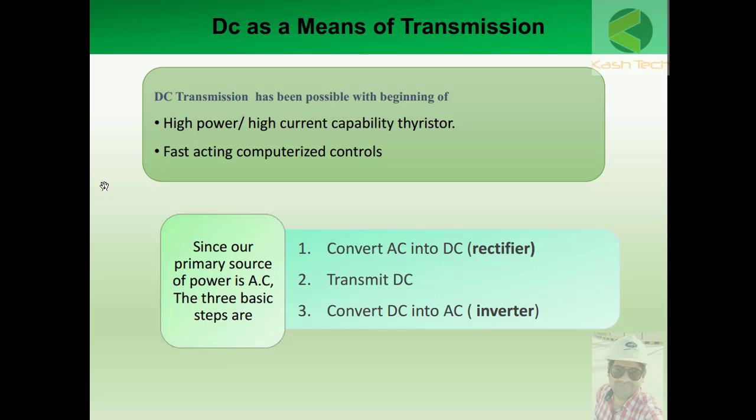Then the power is supplied through the DC transmission line. At the receiving end, the DC is converted back into AC, which is called the inverter function. This is a brief introduction to DC transmission and its feasibility. Thank you very much.